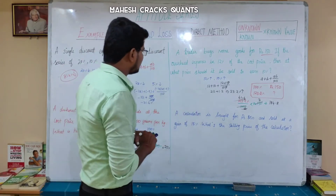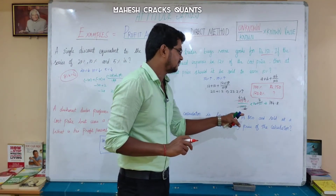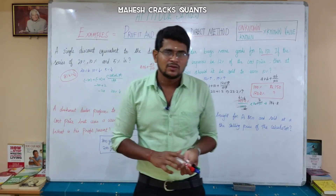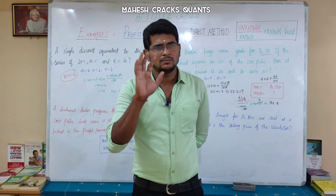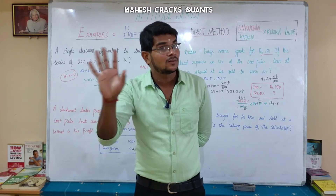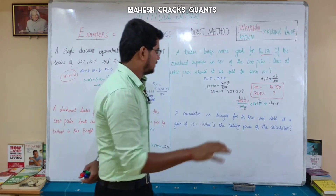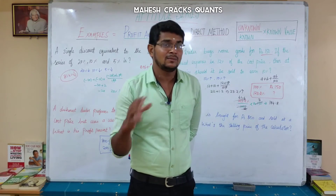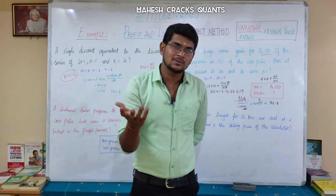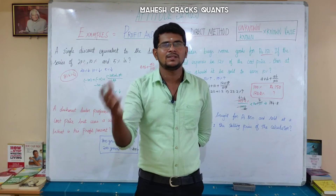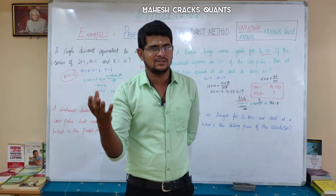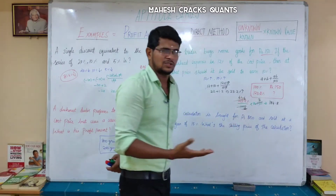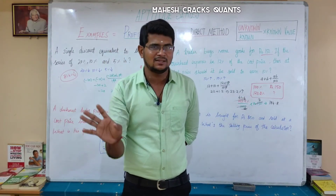Last problem: a calculator is bought for Rs.850 and sold at a gain of 15%. The cost price is 100%, which equals Rs.850. Since there is a gain of 15%, the selling price corresponds to 115%. We need to find the selling price.